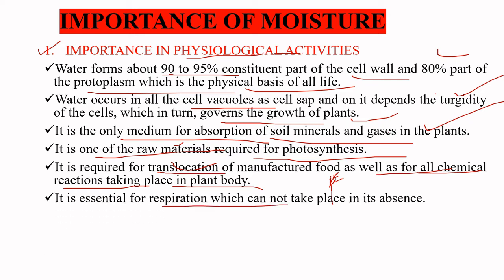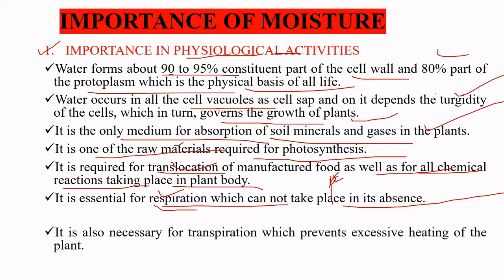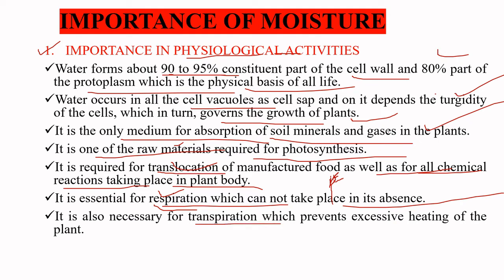Water is essential for respiration, which cannot take place in its absence. Respiration is the process by which the plant converts the sugars or carbohydrates produced during photosynthesis into energy, and water is a very important component required during this process. It is also necessary for transpiration, which prevents the excess heating of the plant. Transpiration is the process by which the plant loses its water molecules to the atmosphere when the temperature rises.